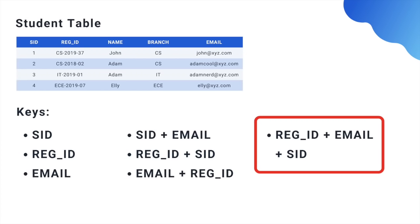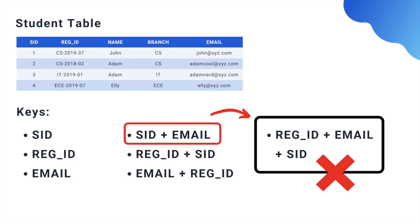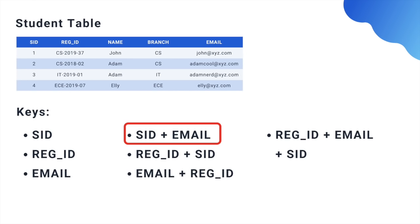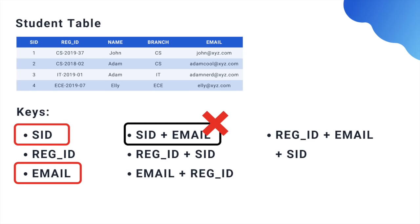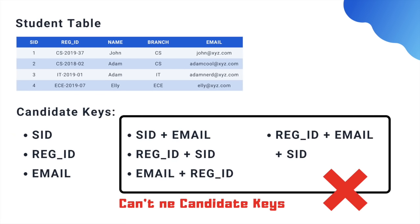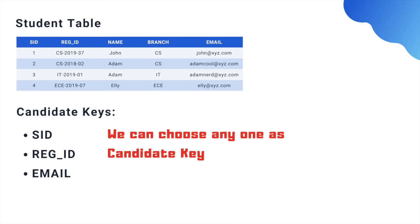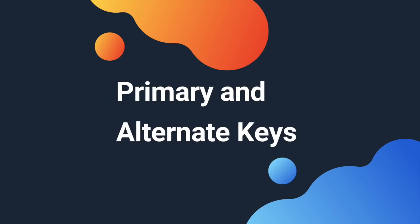Registration ID, Email, and SID together form a super key, while Email and SID is a proper subset of it and is also a super key, hence this is not a candidate key. Similarly, Email & SID is a super key and its proper subsets — Email and SID individually — can each act as a super key, so this is also not a candidate key. This way we can conclude that SID, Email, and Registration ID are the candidate keys for the relationship.